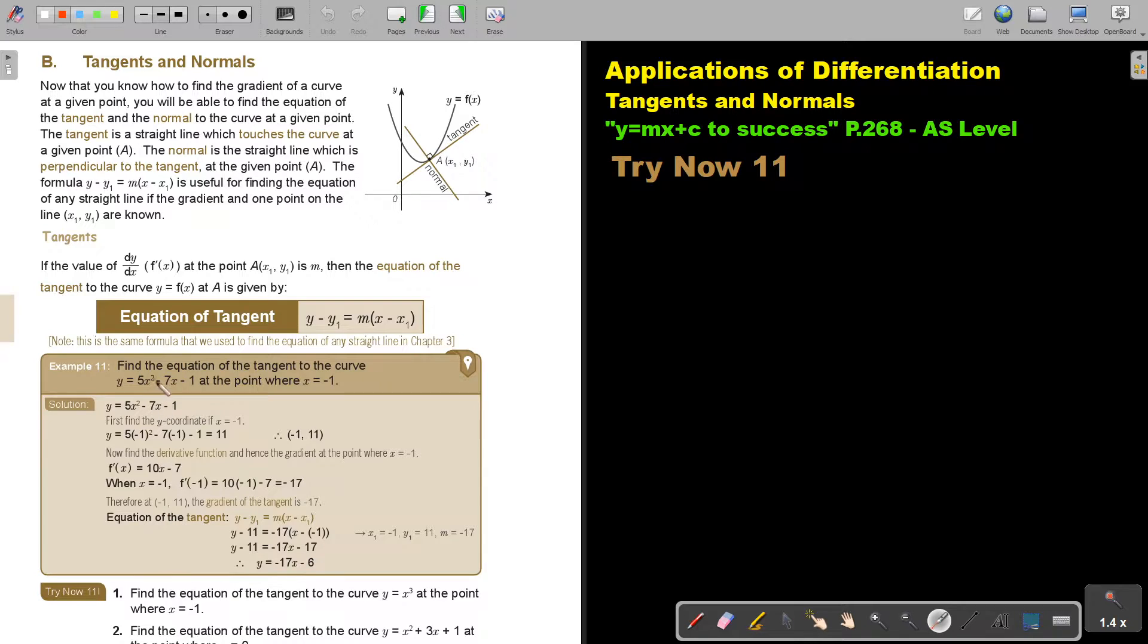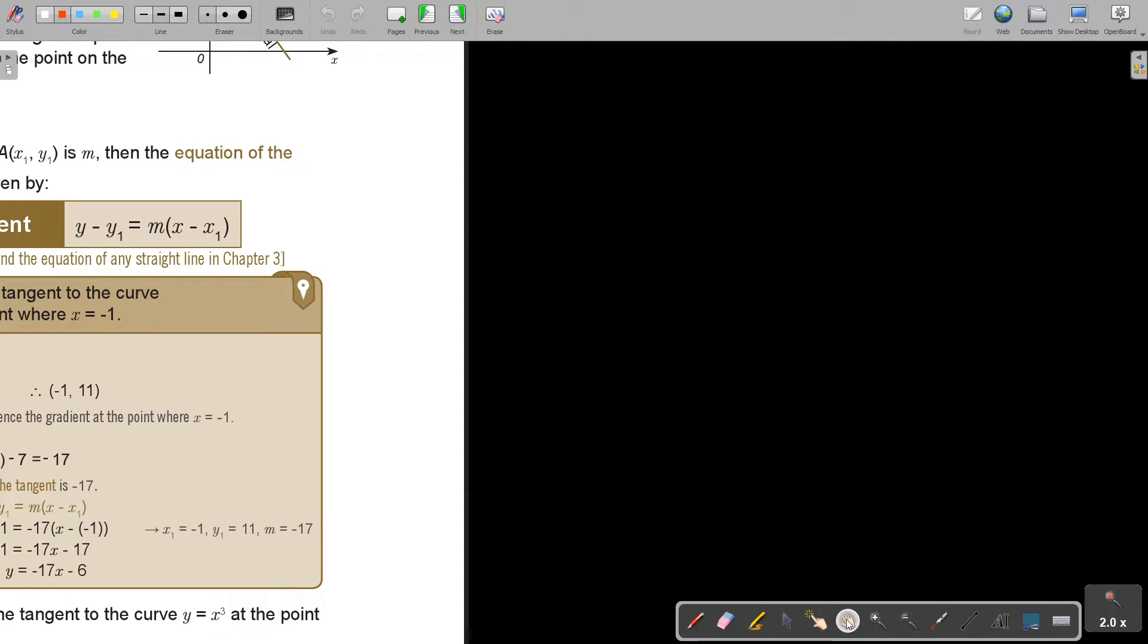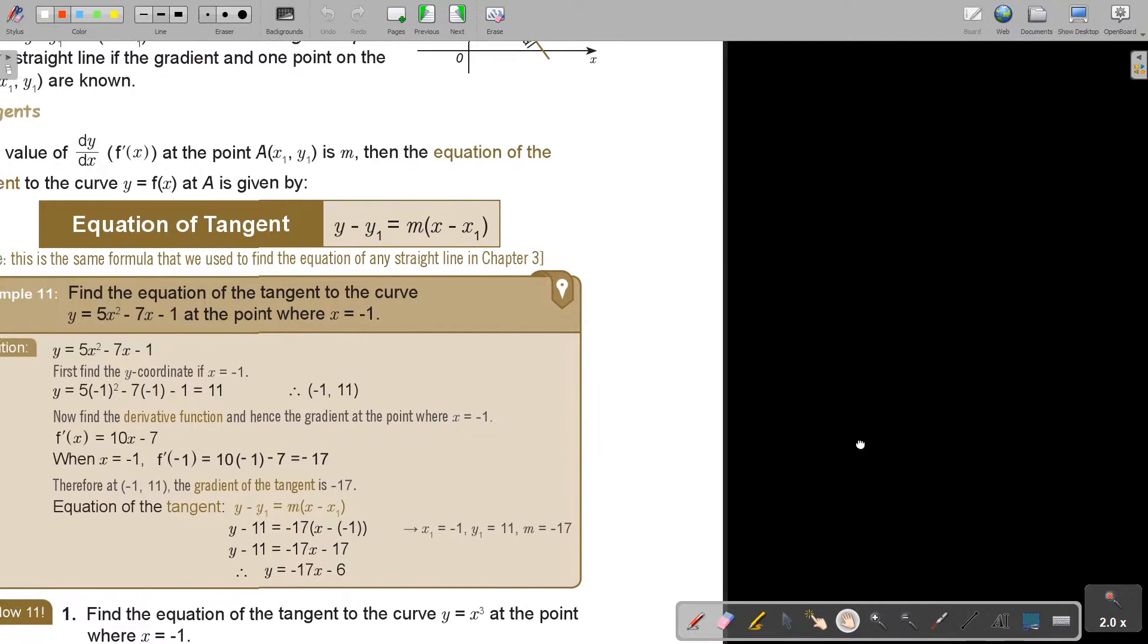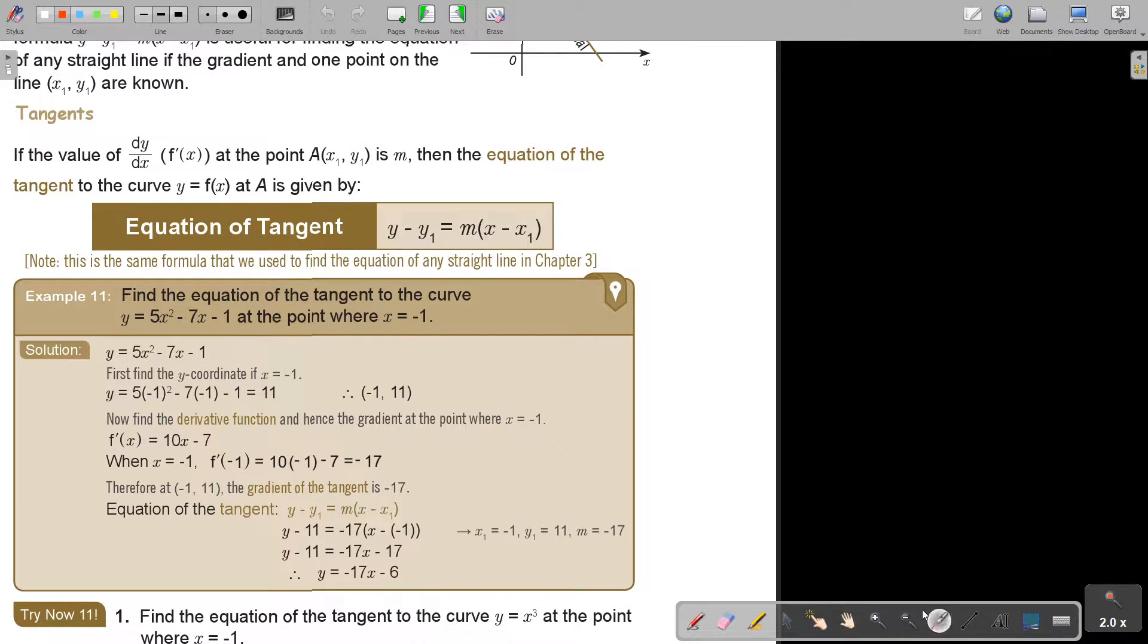Let's look at an example. Find the equation of the tangent to the curve y equals this at the point where x equals negative 1. This is the function. First find the y coordinate of x equals negative 1 because we need the y coordinate. So substitute just like we did in previous videos in the original equation and that is the y coordinate.